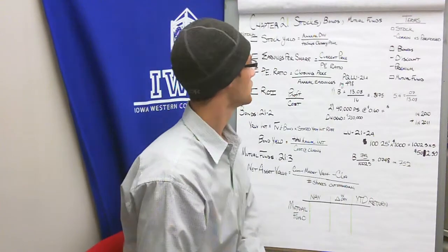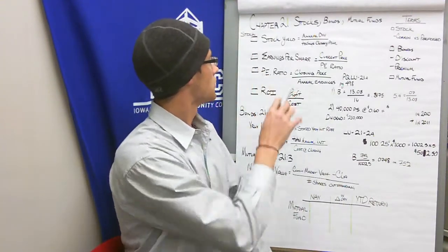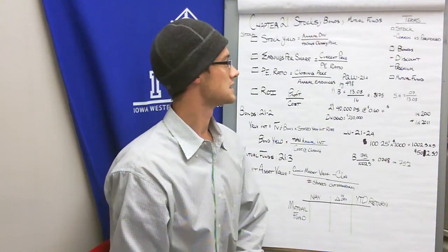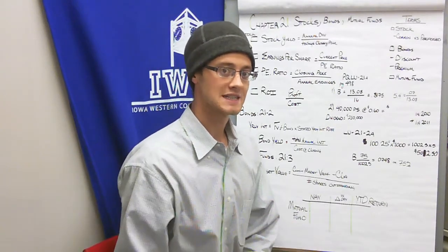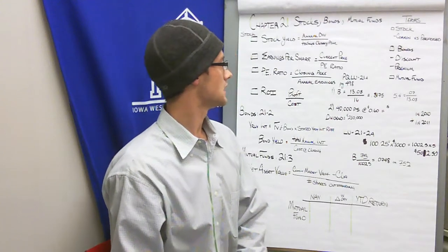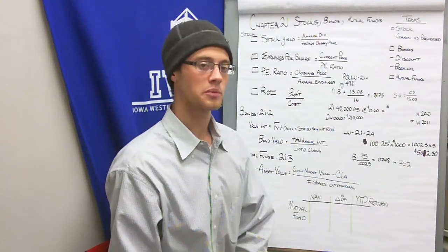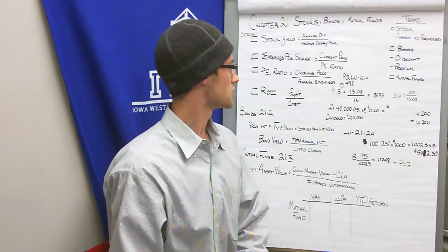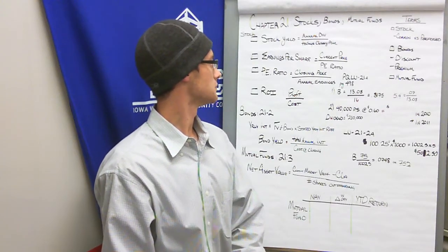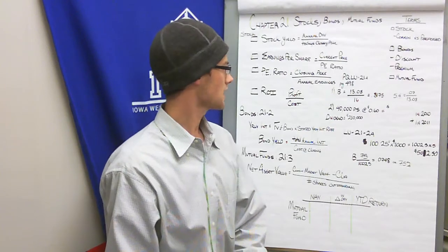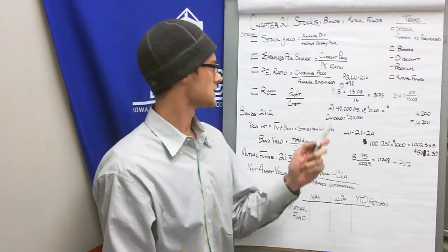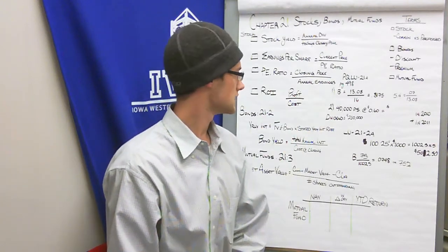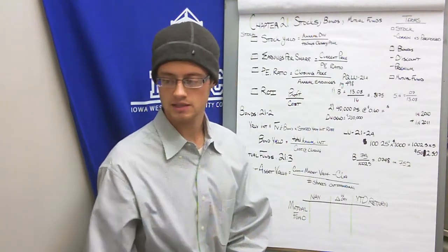A stock yield is basically the annual dividend divided by price. Earnings per share is your current price divided by your P/E ratio — your price-earnings ratio. Your P/E ratio is your closing price divided by your annual earnings. And your ROI, your return on investment, is profit divided by cost.